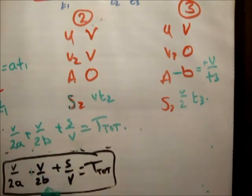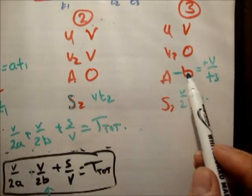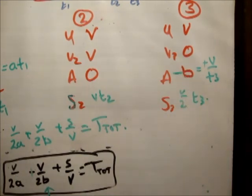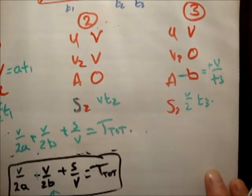Now I'll talk about that subtlety. So the answer in the book on page 62 says that we want to get V over 2A plus V over 2B plus S over V equal to T total. Now what's the difference here? This negative sign. But what's B? B is your deceleration. I can't even spell deceleration. Okay, well, it's your deceleration.